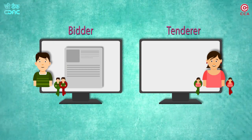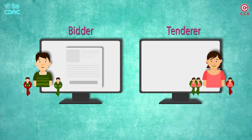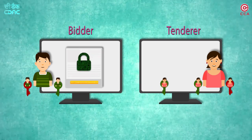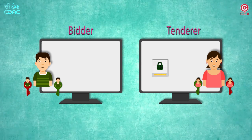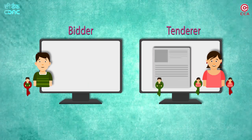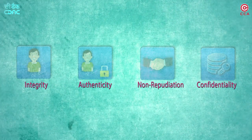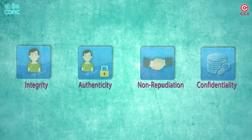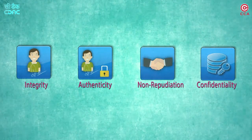In practice, a bidder prepares the bid and digitally signs it. Next, he encrypts the digitally signed bid using the public key of the tenderer and submits it. This combined process of digital signing and encryption ensures all the elements of trust — namely secrecy or confidentiality, authenticity, integrity and non-repudiation.